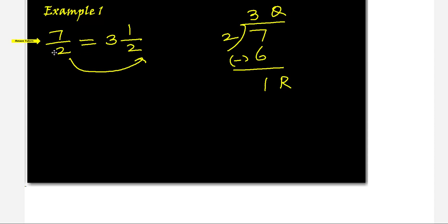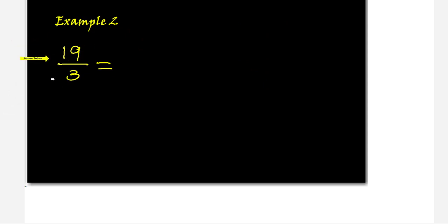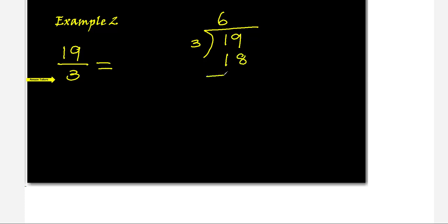Let's do another question: 19 over 3. It's improper because the numerator is greater than the denominator. Do the division — how many 3's in 19? 6 threes are 18, subtract to get remainder 1. Quotient is 6, remainder is 1. Write the mixed number: whole number 6, remainder 1 on top, same divisor 3 on the bottom — giving 6 and 1 over 3.